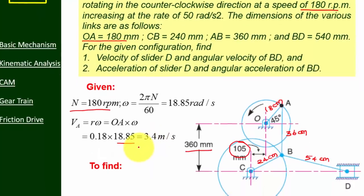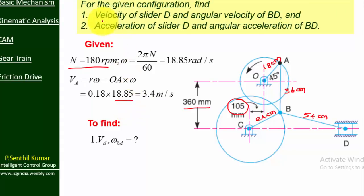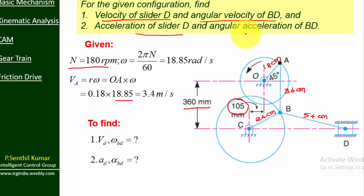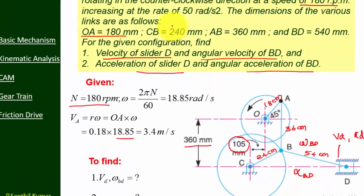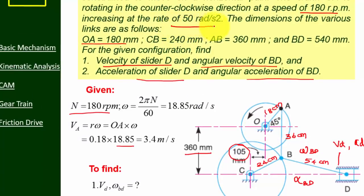Our aim is to find: subdivision 1 — the velocity of the slider and angular velocity omega BD; subdivision 2 — the acceleration of the slider and angular acceleration of BD. We need to find BD, AD, omega BD, and alpha BD. One more important data: the angular acceleration of the crank is 50 radians per second squared. We must note that here.